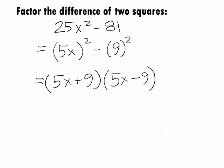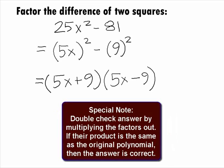We can always double check ourselves on factoring problems by multiplying out the factors that we have. If they multiply to be the original polynomial, then we have the right factors. If they don't, we need to go back and try factoring the problem again.